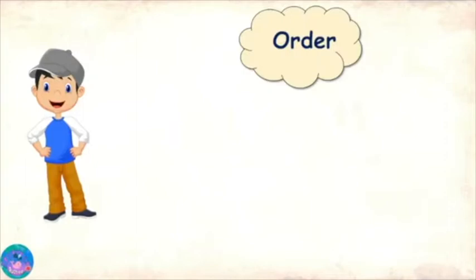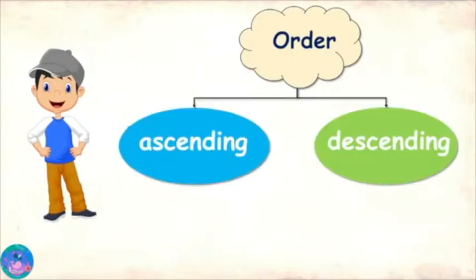I also remember that ordering is of two types: ascending and descending. Yes, and do you remember what we mean by ascending and descending? Of course, you taught me a song that helps me remember it very well.